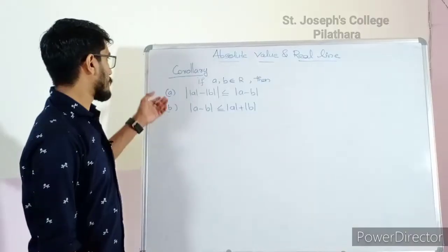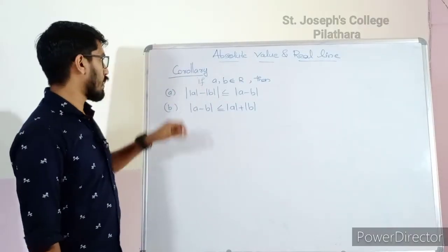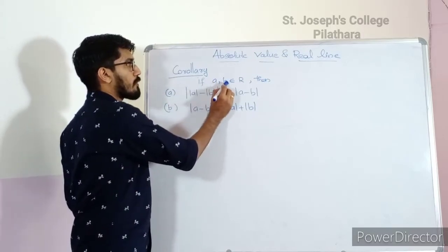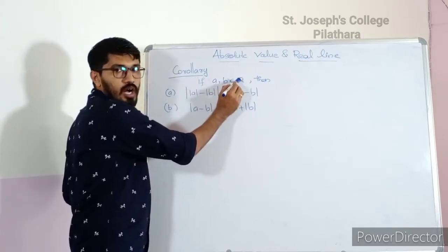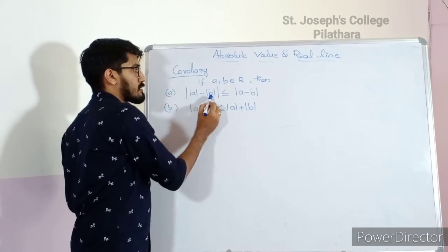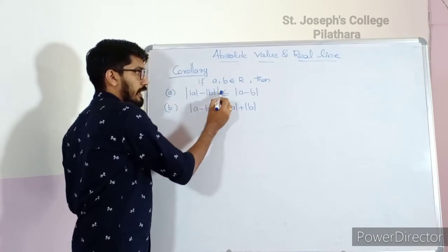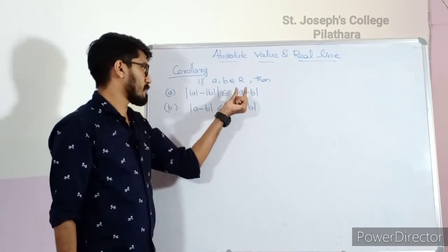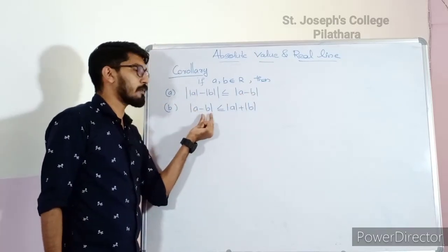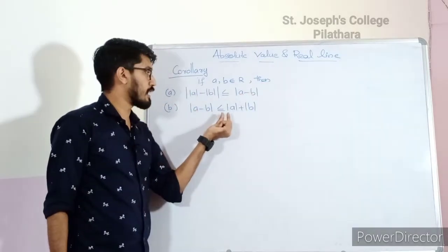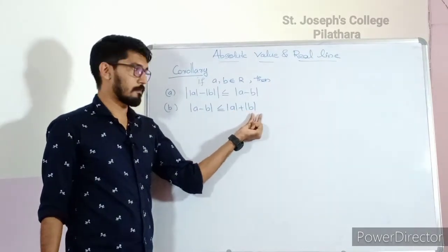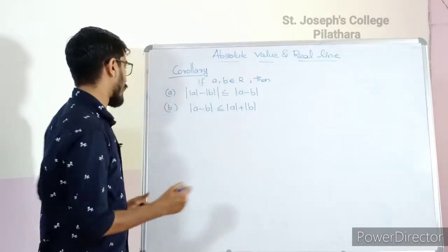We move on to the corollary to the triangle inequality. Corollary: if a, b belong to ℝ, then |a| − |b| ≤ |a − b|. Proof.